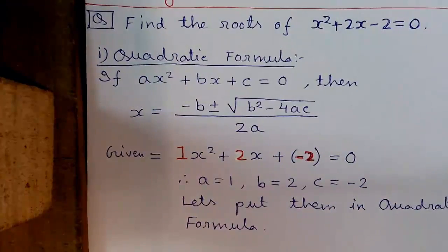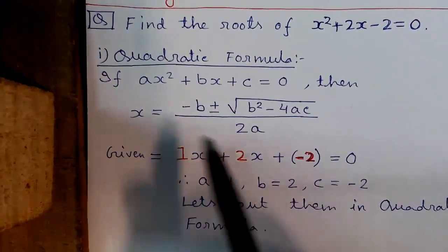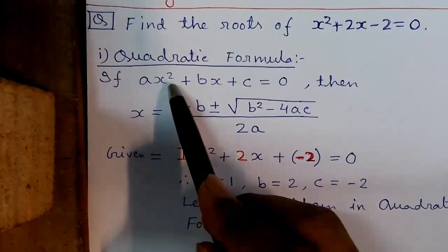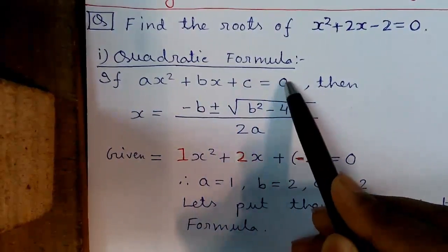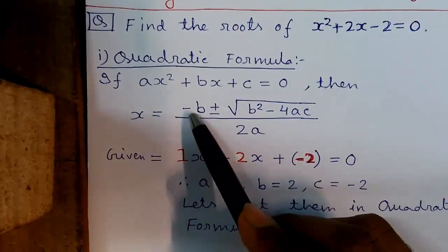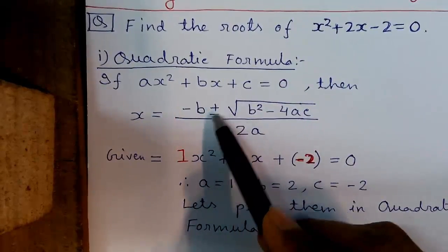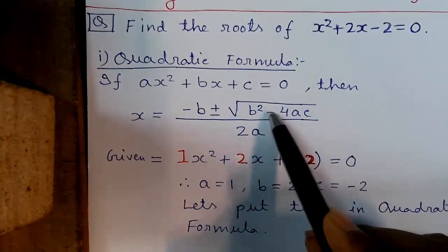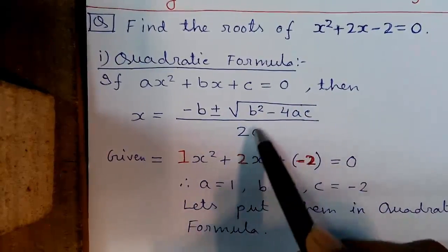So first the quadratic formula. It is given by: if AX square plus BX plus C is equals to 0, then X is given by minus B plus or minus root over B square minus 4AC, divided by 2A.